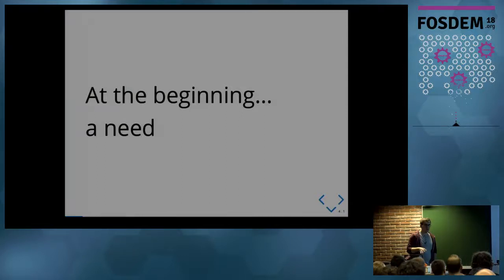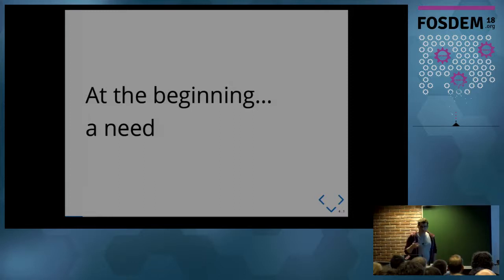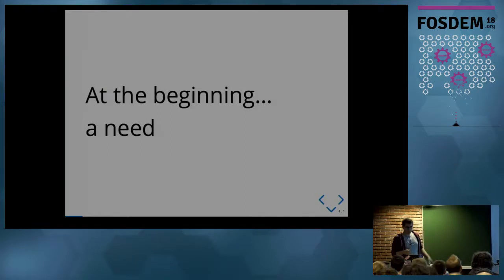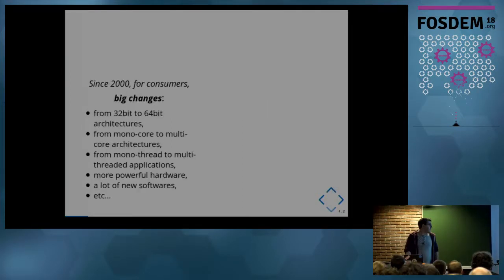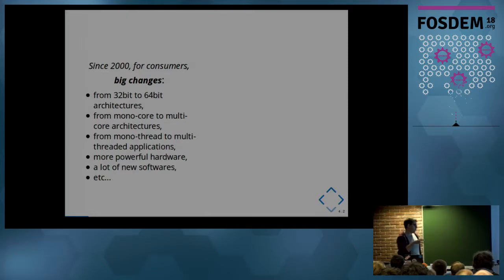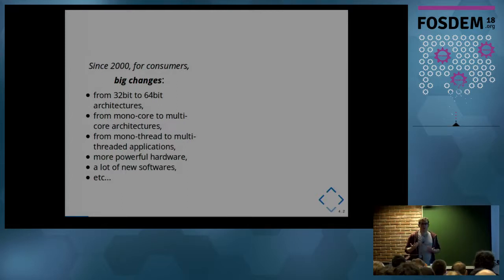Today there are a lot of new programming languages — D, NIM, Go, Rust, et cetera. But sometimes when we want to understand why a programming language is really important, we have to understand what the goal of that programming language is. Since 2000, there have been big changes: we switched from mono-core to multi-core architectures, monothread to multithreaded applications, more powerful hardware, and the democratization of the internet introduced a lot of new software.